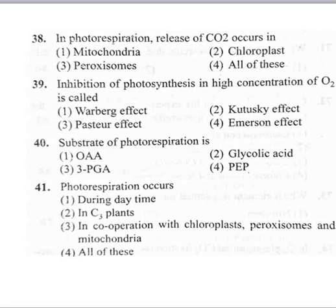Coming to the 40th question: the substrate of photorespiration is option 1 OAA (oxaloacetic acid), option 2 glycolic acid, option 3 PGA (phosphoglyceric acid), option 4 PEP (phosphoenolpyruvic acid). The substrate of photorespiration is glycolic acid. Glycolic acid acts as the substrate of photorespiration.